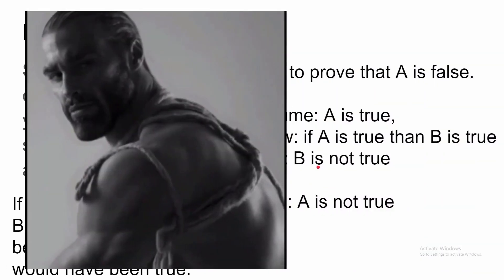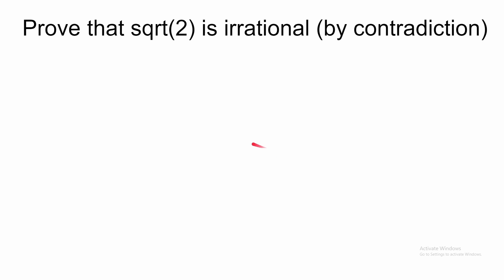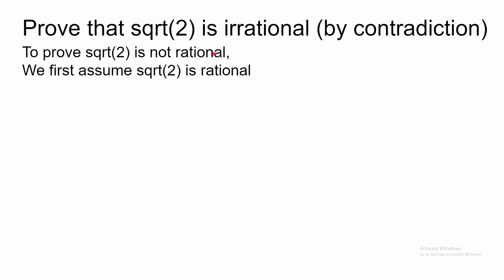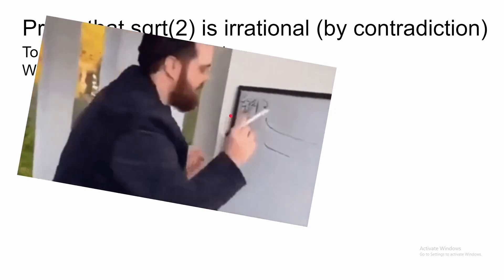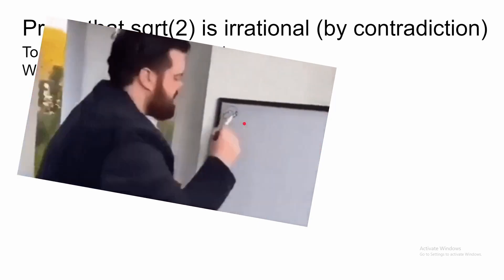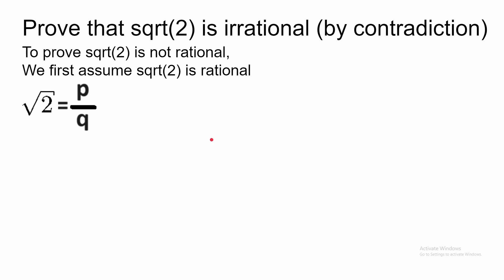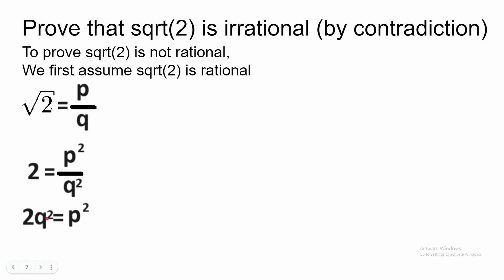Let me give you an example of a proof by contradiction. Prove that the square root of 2 is irrational by contradiction. To prove that the square root of 2 is not rational, we first assume that the square root of 2 is rational, and then we try to find something that leads to a contradiction. For a number to be rational, it means you can express it as a ratio of two integers. So let's assume square root of 2 equals P over Q, where P and Q are integers. If we square both sides, we get 2 equals P squared over Q squared. Let's multiply Q squared to both sides, and we get 2Q squared equals P squared.